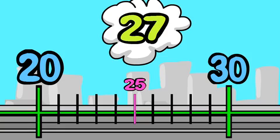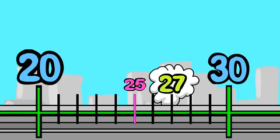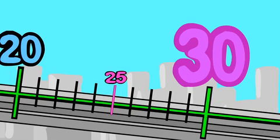Step three: locate 27 on the number line. You can see that 27 is more than 25. Step four: round the number. 27 is closer to 30 than to 20, so to the nearest ten, 27 rounds up to 30.